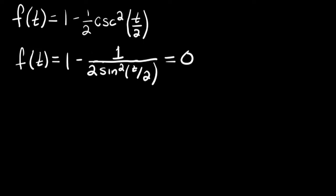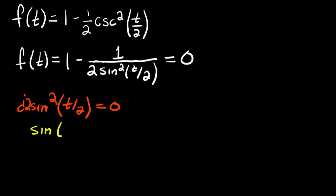I want to find the zeros but also where this is undefined. It's undefined when the denominator is equal to zero, because you can't divide by zero. So the question is where is 2 sine squared of t over 2 equal to zero? We don't really need to worry about the 2 or the squared — we're basically looking for where sine of t over 2 equals zero.